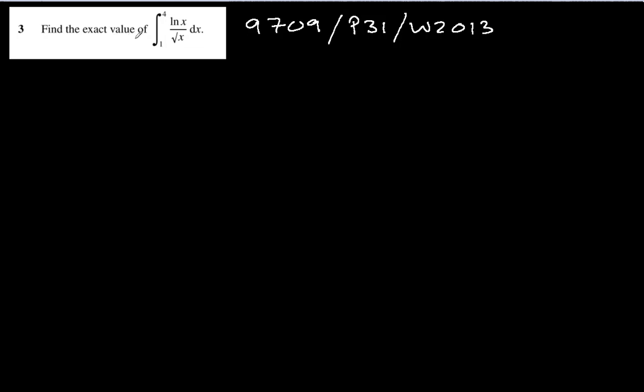Find the exact value of this integration with limits 1 and 4. We'll take care of 1 and 4 later. Let's focus on the main integration first. Can I write like this? 1 over square root x multiplied by ln x dx. Why did I separate this? So that I can use integration by parts.